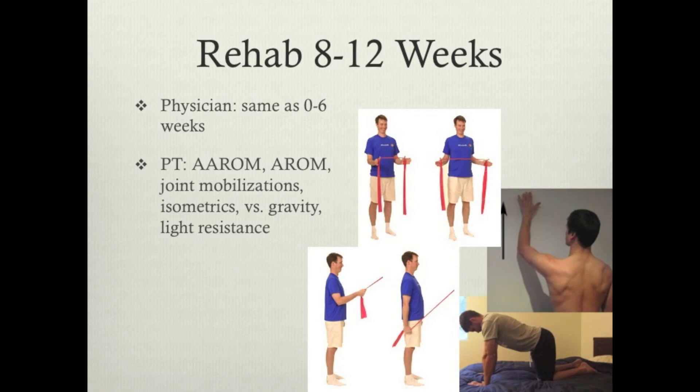Between weeks eight and twelve is where your traditional therapy comes in. That's where you get out the elastic tubing, do a lot of range of motion activities, and start doing light resistance activities. All the pictures to the right show common exercises you'll do in the gym and at home. This is where we start adding more resistance and pushing through a greater range of motion in all planes.